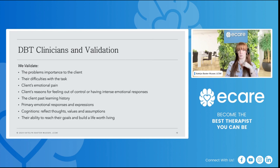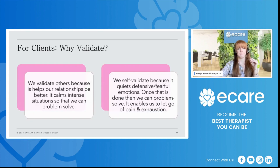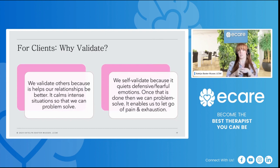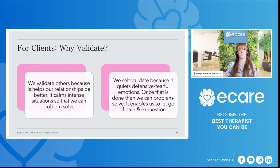We can validate clients' ability to reach their goals and build what Marsha Linehan calls a life worth living — and that's ultimately what we're helping clients to work towards as they develop these skills. Many clients come in with a protective armor up. Many have experienced an extensive amount of trauma, so it makes sense why they would feel that way. They struggle to validate others and also struggle to validate themselves. We validate others because it helps our relationships be better and calms intense situations so we can problem solve. We self-validate because it quiets defensive and fearful emotions, enabling us to problem solve and let go of pain and exhaustion.